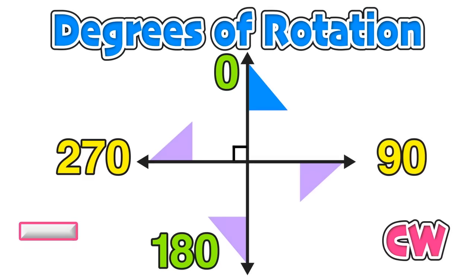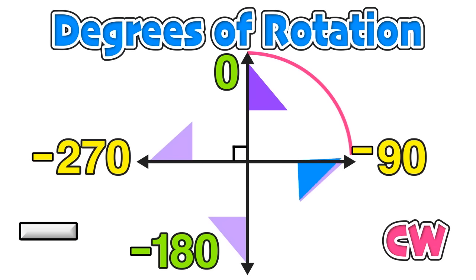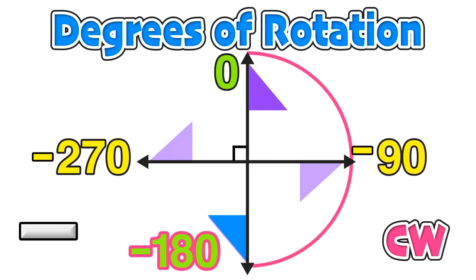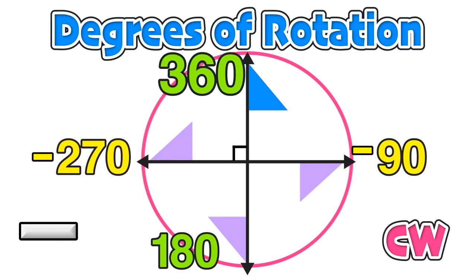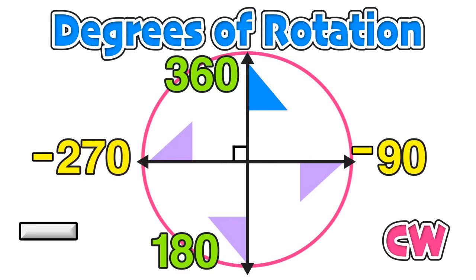If we rotate in the opposite direction — clockwise — our rotations will be negative values. A negative 90-degree rotation is one quarter turn clockwise. A second quarter turn clockwise gives negative 180, which puts the figure in the same location as positive 180. Another quarter turn is negative 270 degrees, and a final quarter turn completes the 360-degree rotation, bringing the figure back to where it started.